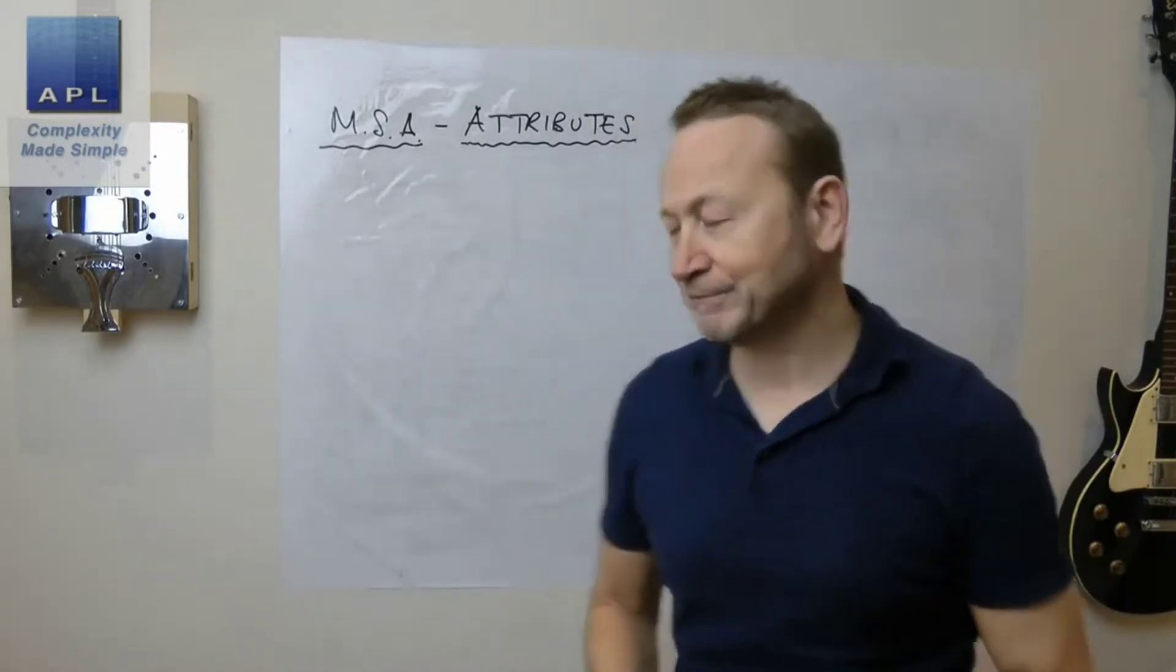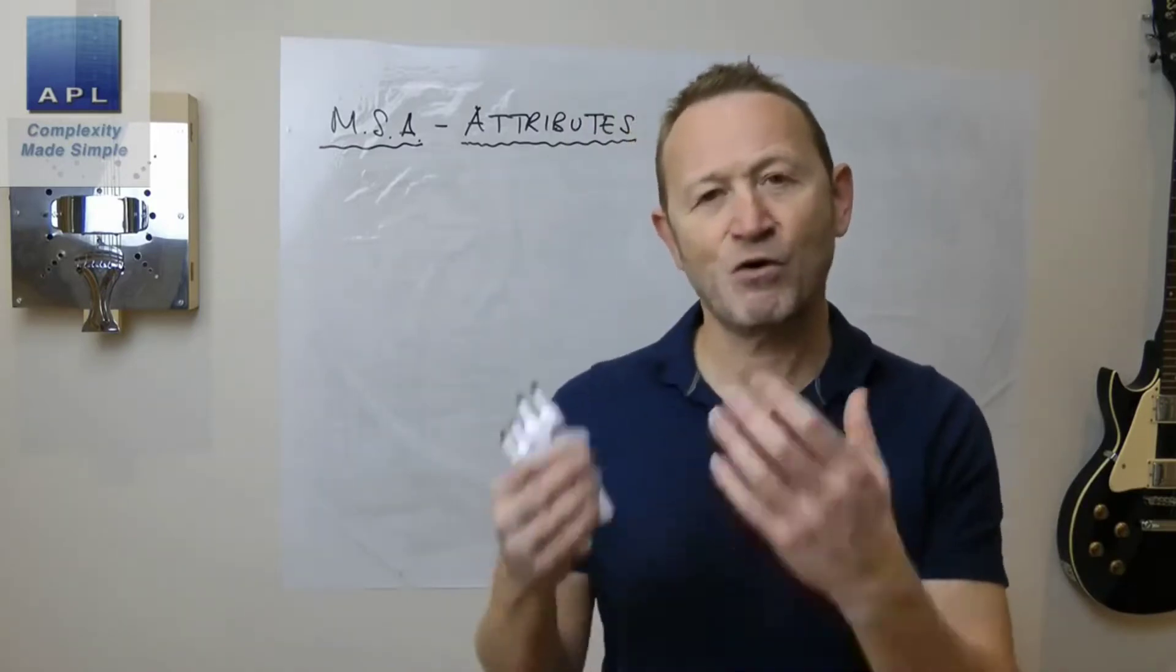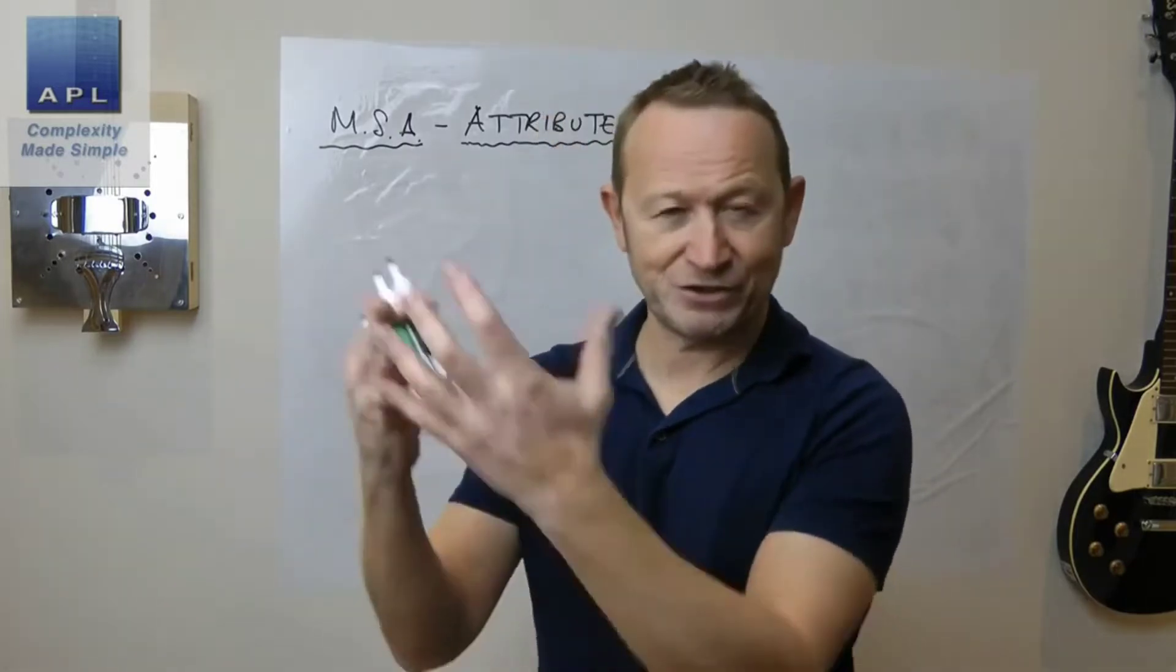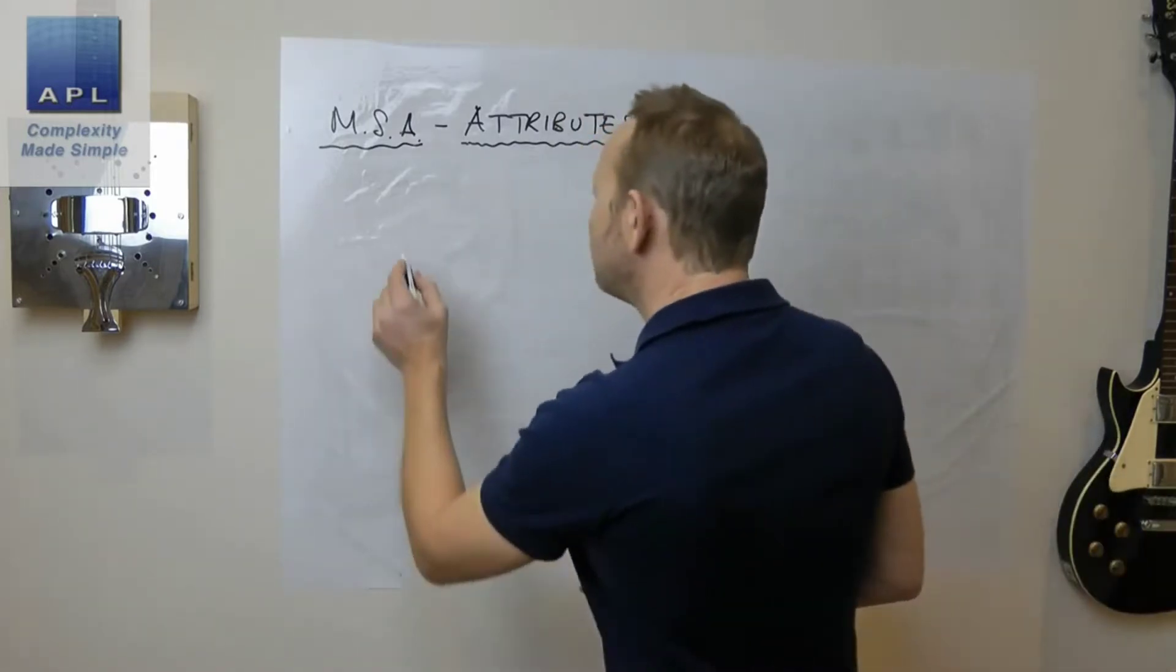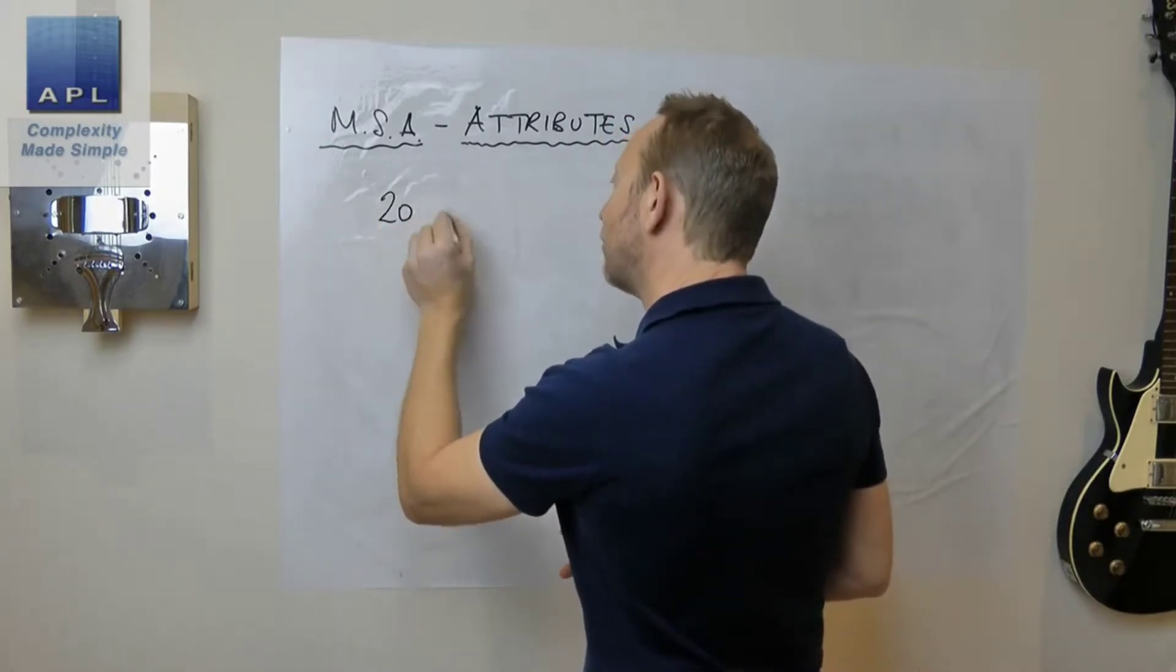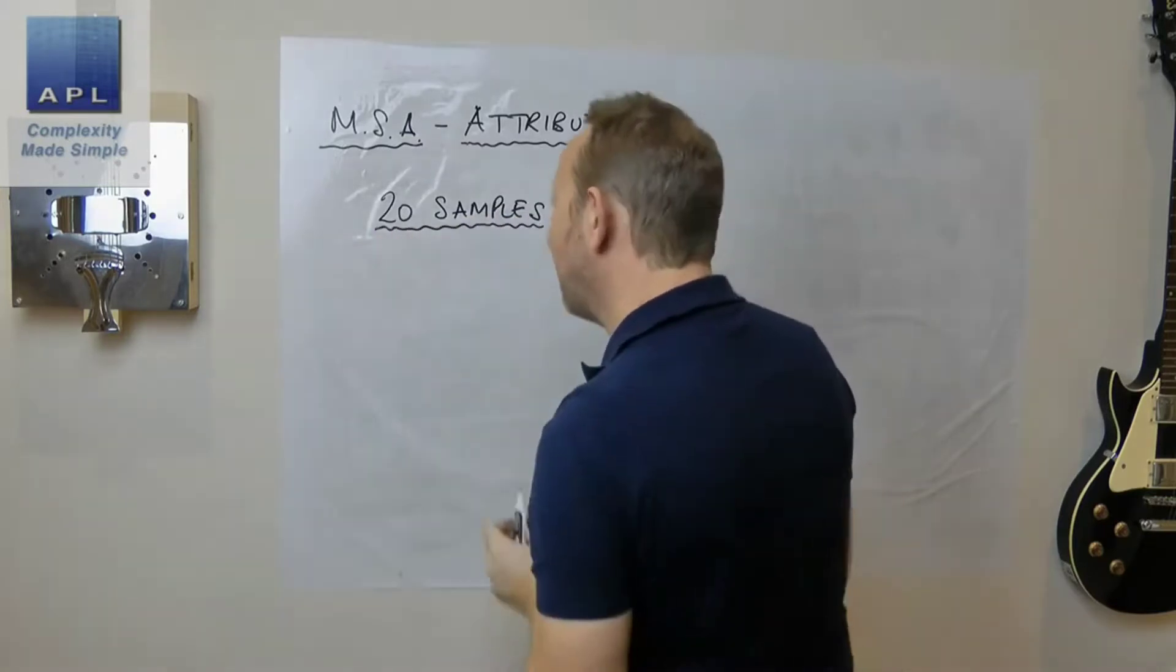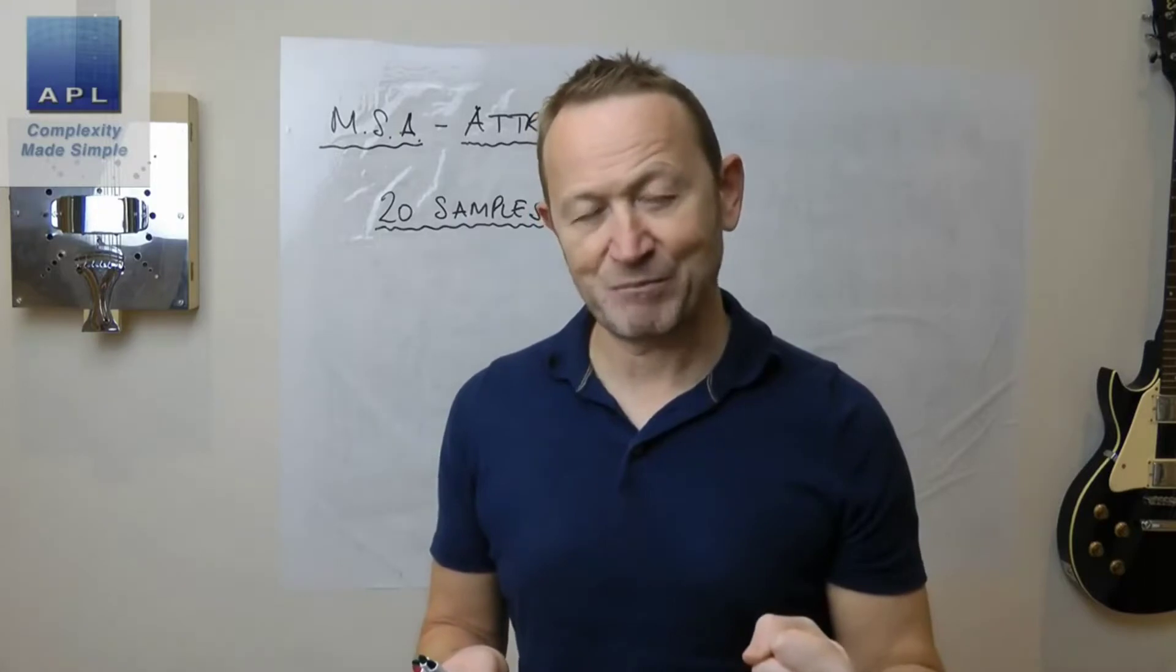Some important things about setting up the MSA for attribute data. First, you're going to have to get some samples for the measurement systems to inspect and to decide whether they're good or bad, whether they're pass or fail. Normally what we do is we get 20 samples. Unlike the other MSA for variable data where you would randomly select the samples, what you're going to do here is actually specifically select the samples.